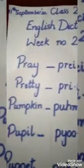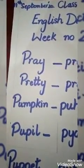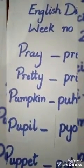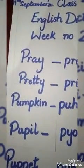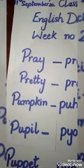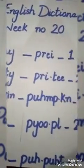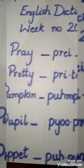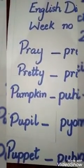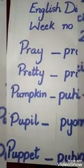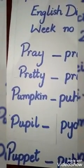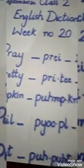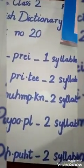Pump-kin. P-U-M-P-K-I-N, Pumpkin. Our next word is 'Pupil'. P-U-P-I-L, Pupil. Pupil is also a two-syllable word. Our next word is 'Puppet'. P-U-P-P-E-T, Puppet. Puppet is also a two-syllable word.